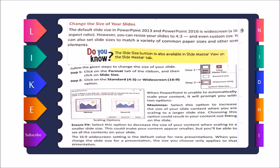Select Maximize to increase the size of your slide content when scaling to a larger slide size, though this could result in content not fitting on the slide. Select Ensure Fit to decrease the size of your content when scaling to a smaller or larger slide. The 16:9 widescreen setting is the default for new presentations. When you change the slide size for a presentation, the size you choose applies only to that particular presentation.